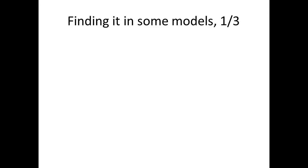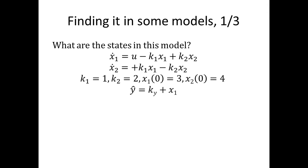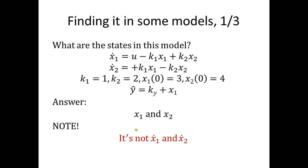Let's learn to identify states in three different ways of writing a model. We start with the easiest: the standard state space format. We look for the time derivatives — the dots. Here we see two such equations, one for x1 and one for x2. The other equations have no dot and no time derivative, so the answer is simply x1 and x2. A common mistake from previous exams is to answer x1-dot and x2-dot — but those are not the states. Those are the time derivatives of the states, not the states themselves.